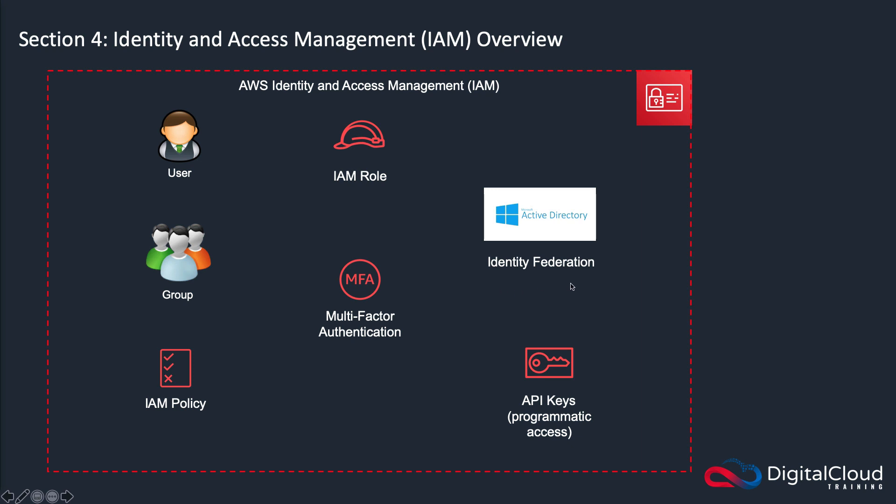We then have identity federation, which basically means that you're able to integrate an external directory. In most cases that's going to be Microsoft Active Directory. Your company may have its own Microsoft Active Directory database, and if you're logging on to a Windows machine in a company, it's very likely that machine is connected to Active Directory and that's where your user account is stored. You can integrate Active Directory into IAM so you can use that same user account to authenticate into AWS and access AWS resources. How that's done is beyond the scope of the Cloud Practitioner exam, but it's good to know that it's possible.